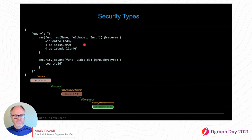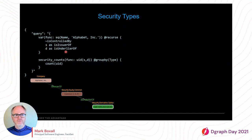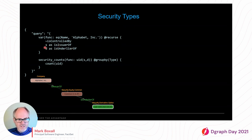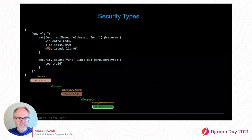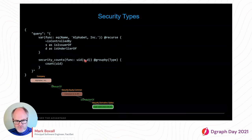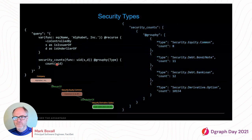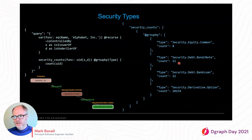Building on the previous query, not only do we want to pull in the immediate securities that are issued, but we also want to pull in derivatives that those securities are the underlier of. We add one more edge type — 'is underlier of' — storing the initial set of securities in S and the additional derivative securities in D. We grab the UIDs for both and group on type to get a count per type. We find a total of 8 common stock, 11 bonds, 12 bank loans, and over 10,000 derivatives.